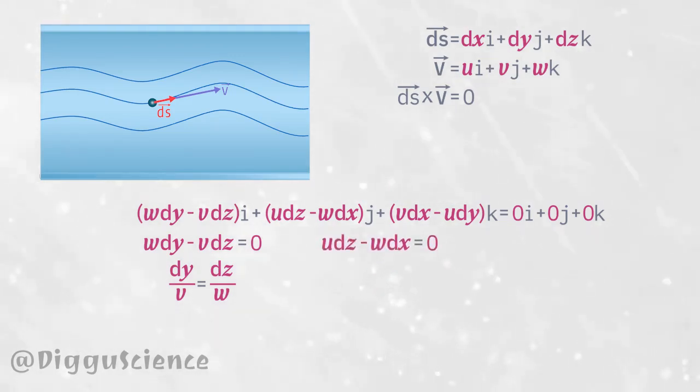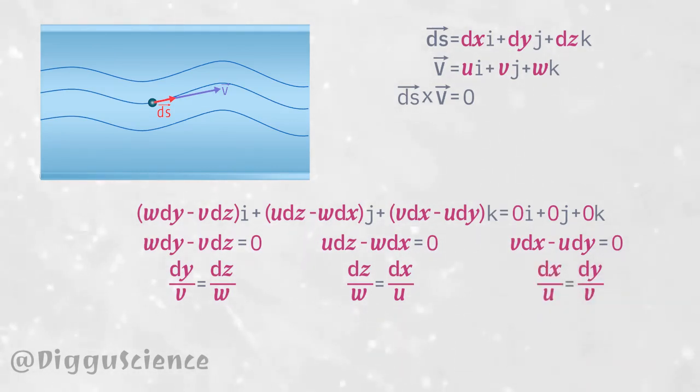Likewise, j component: u dz minus w dx equals zero, or dz over w equals dx over u. And k component: v dx minus u dy equals zero, or dx over u equals dy over v.